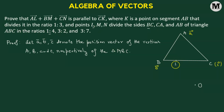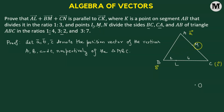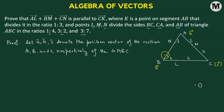We consider point L on the segment BC, and it divides BC in the ratio 1 to 4. Then we have another point M on the side CA of the triangle, and it divides it in the ratio 3 to 2. Finally, we have the point N on the side AB of the triangle, which divides it in the ratio 3 to 7.